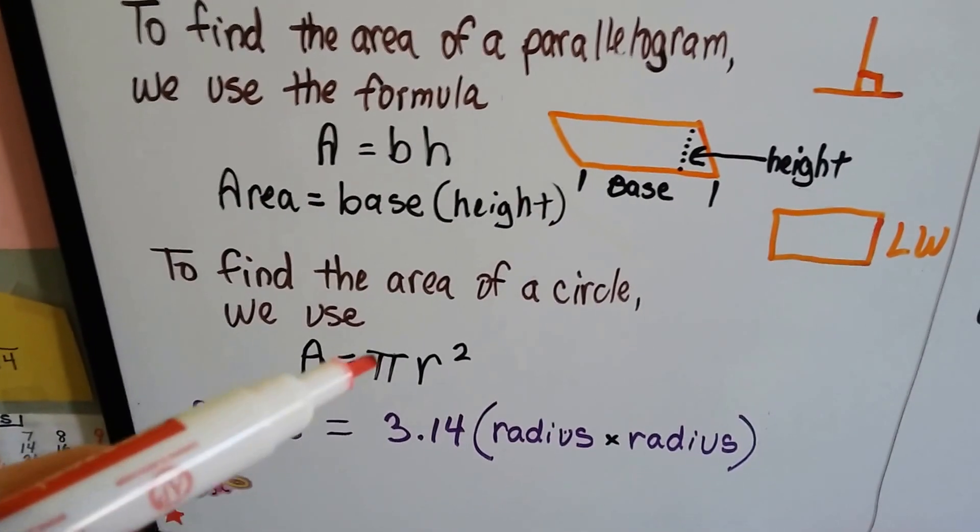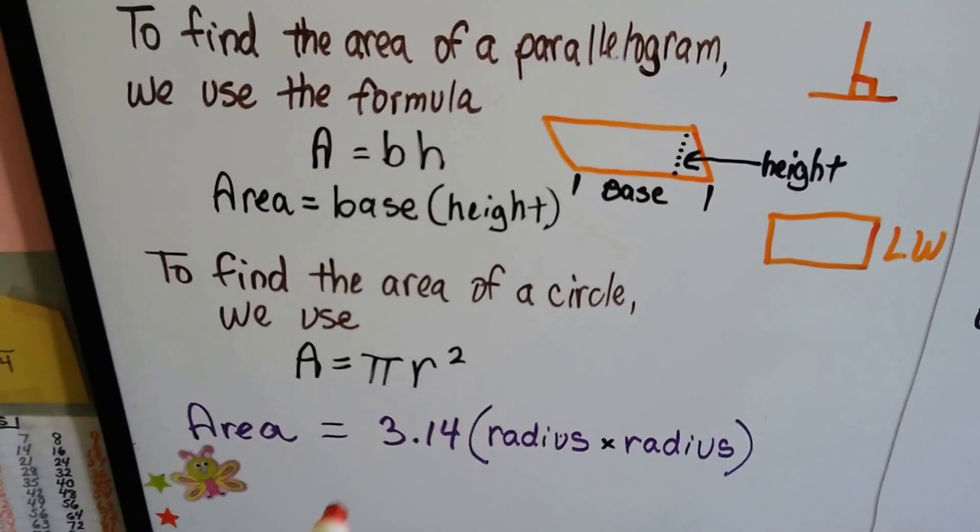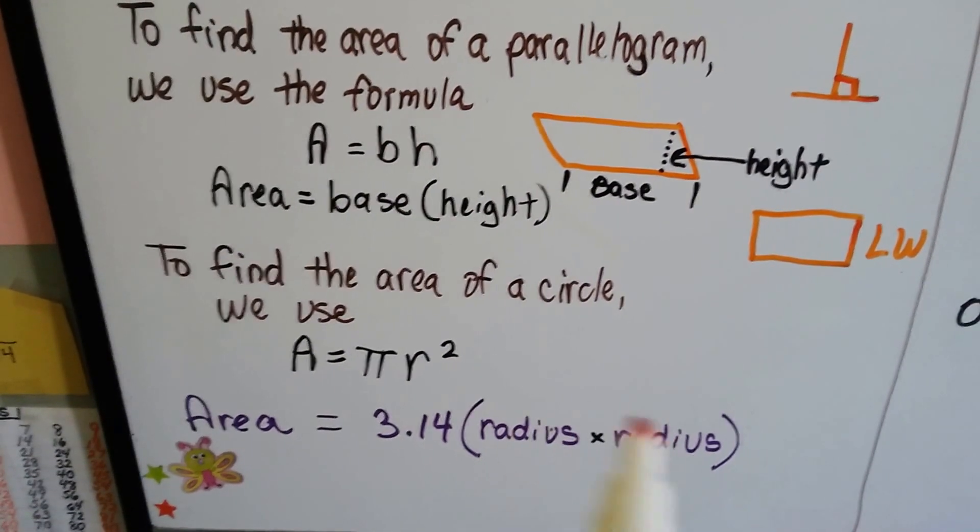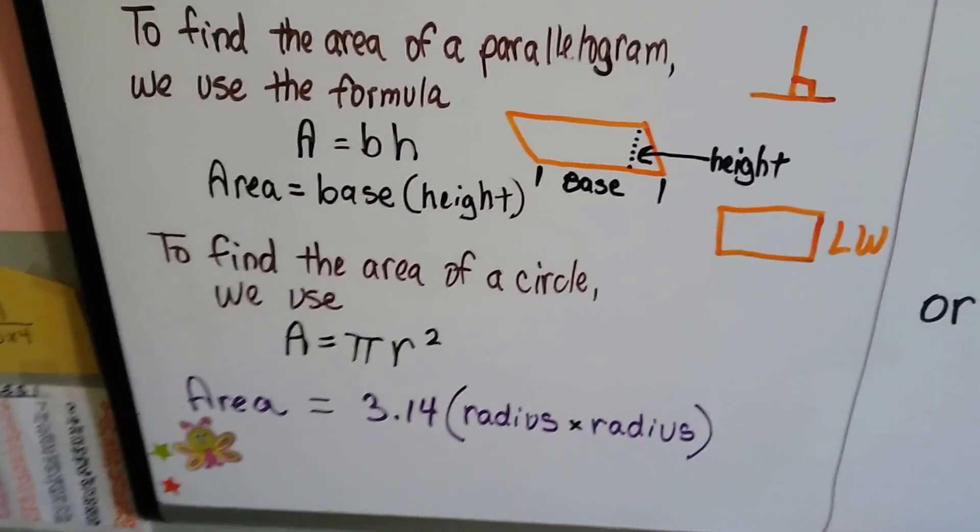Well, to find the area of a circle, we use pi r squared. That would be 3.14 times the radius times the radius. We do the radius times the radius first, right?